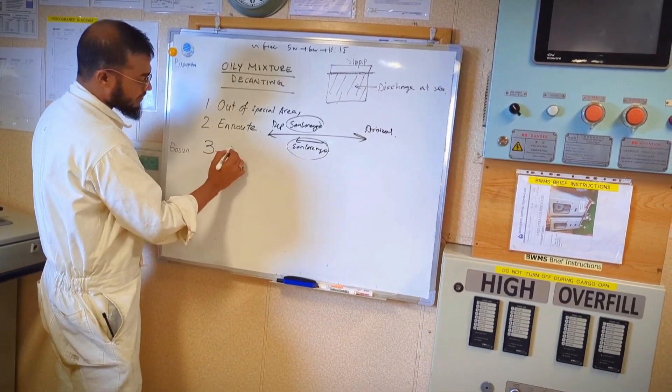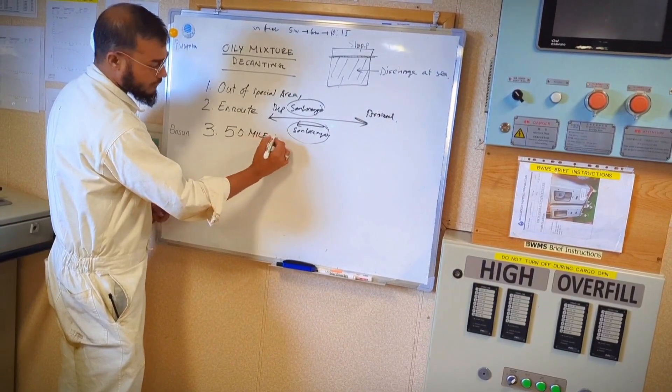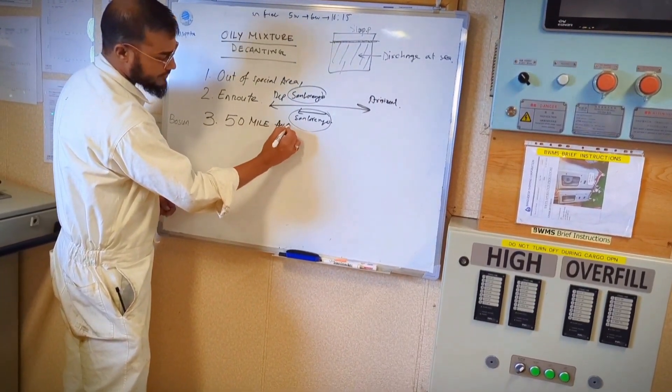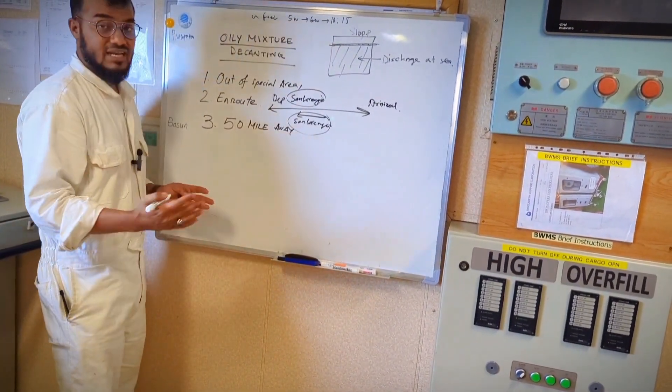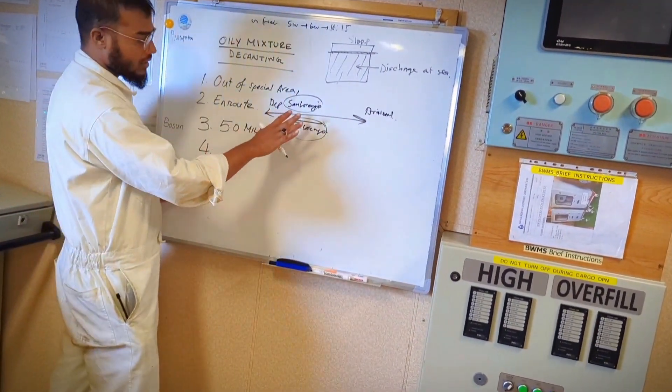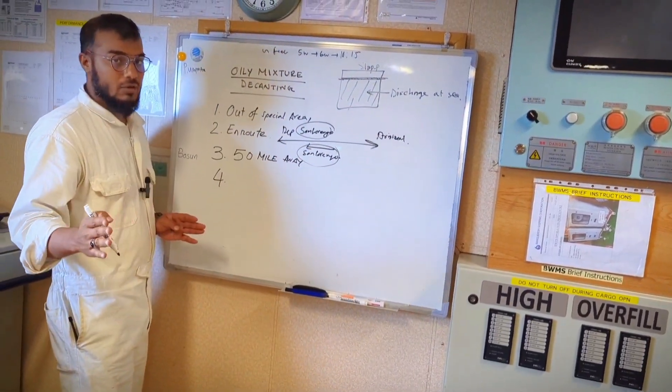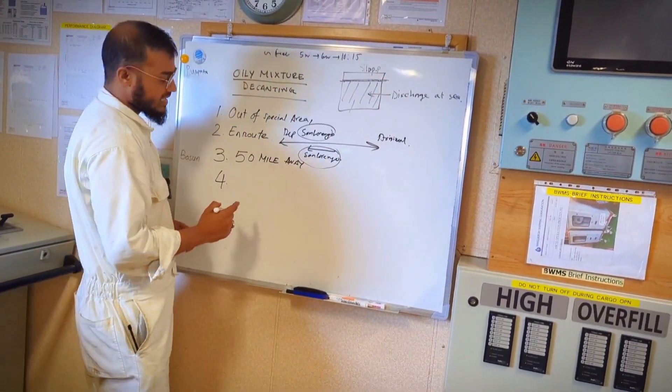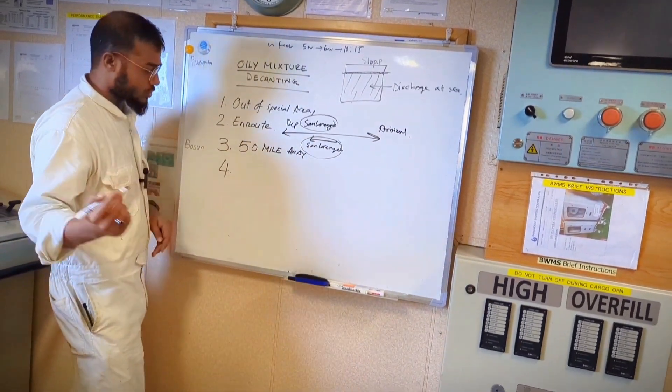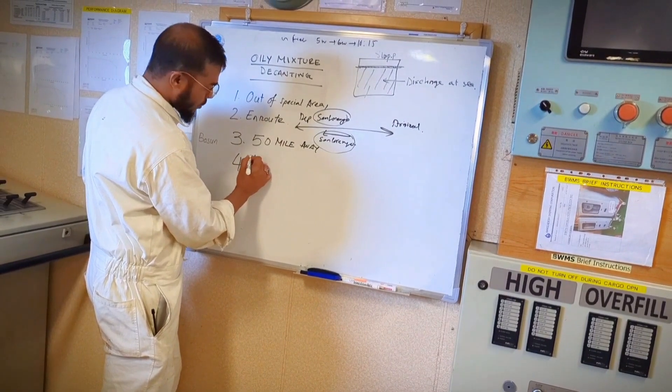Okay, number three, you have to be 50 mile away, 50 nautical mile of course, away from the nearest land. We are right now decanting and we are loading back in San Lorenzo but we are already 50 nautical mile away from the nearest land and we are doing a decanting right now. As I showed you my ODME is running, the oil discharges to be through ODME.